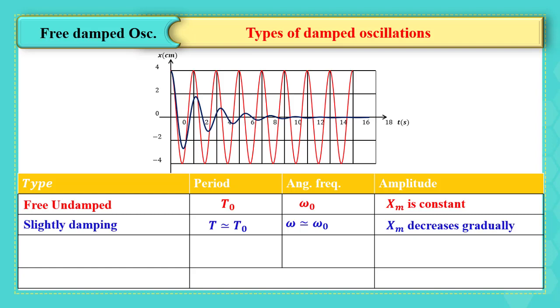The second type is large damping. In this case, the period is approximately greater than the proper period. The pseudo angular frequency is approximately less than omega zero, and the amplitude here decreases with time and eventually becomes zero.